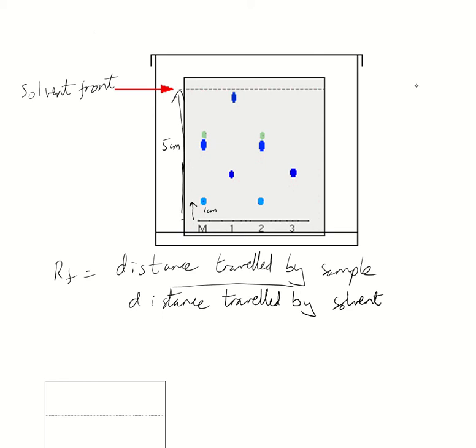is 5 centimetres. So nice and easy for this example, all I do is just 1 over 5 and that gives me a value of 0.2. Now RF can never be greater than 1 because what it means is your sample would have travelled somewhere up here and somehow jumped above the solvent. That cannot happen.